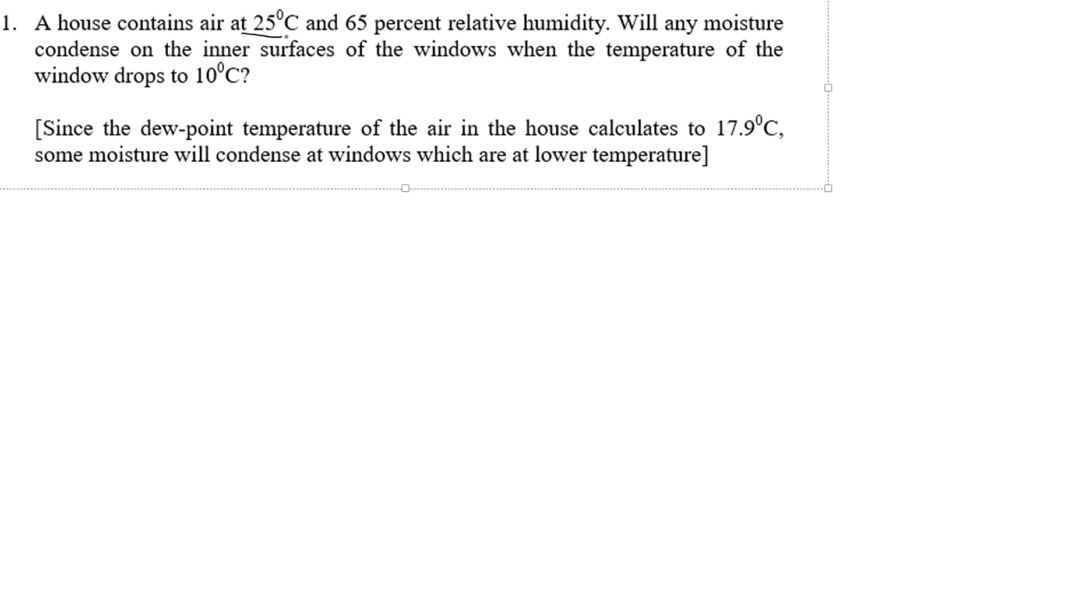Okay, this is question 1 from example sheet 1. A house is at 25 degrees C, 65% relative humidity, and we want to find out if any moisture will condense on the windows if the temperature drops below 10 degrees C.